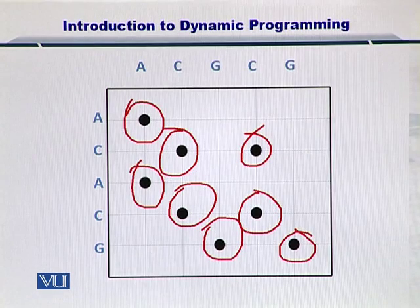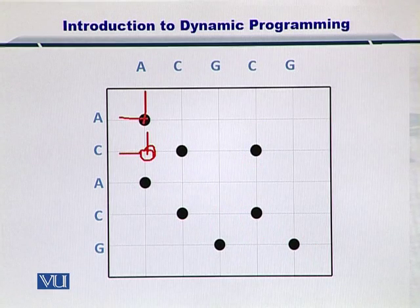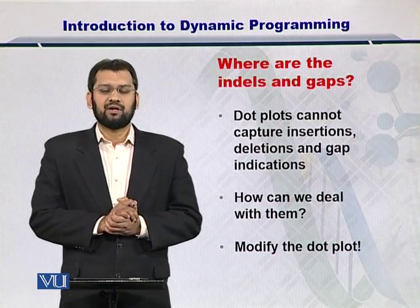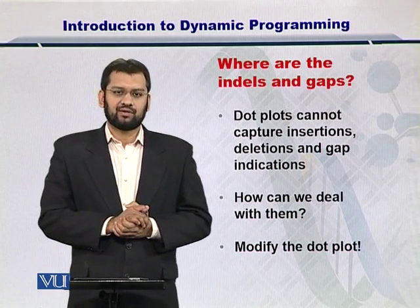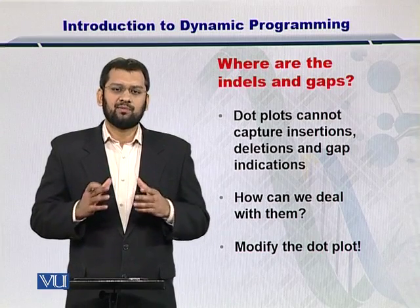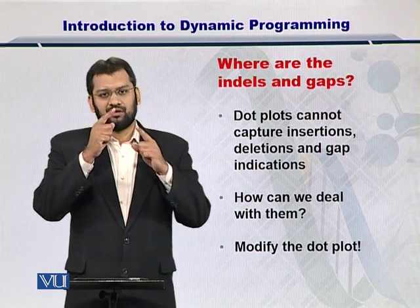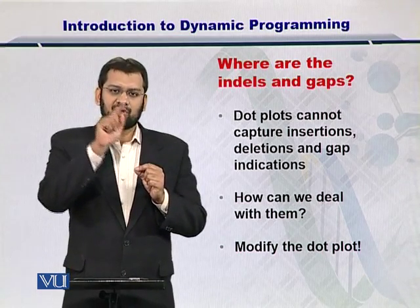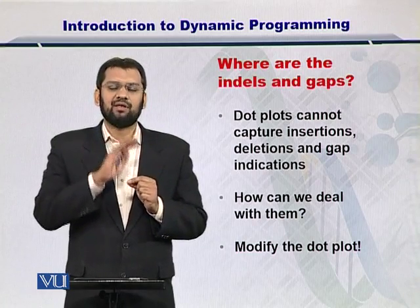It is important to note that these dots are positioned on the corners of the grid points. In their current form, dot plots cannot capture insertions, deletions, or mutations, because you only indicate matches in the matrix. Nucleotides or amino acids that are not matching are not labeled in any way.